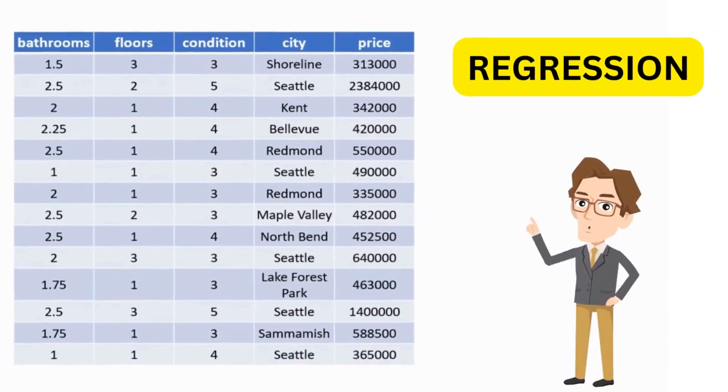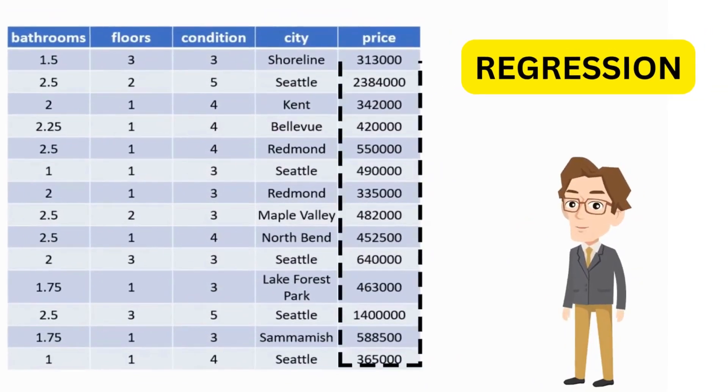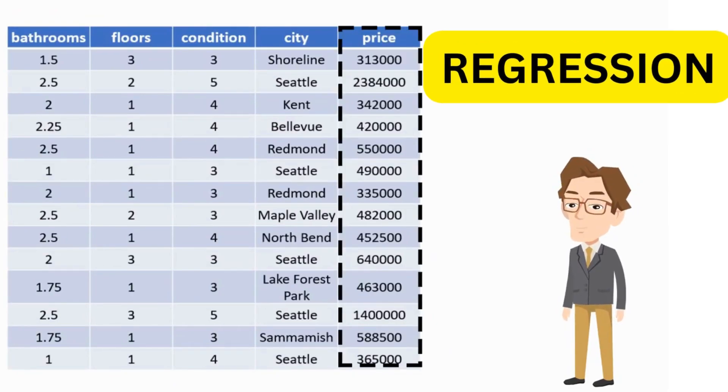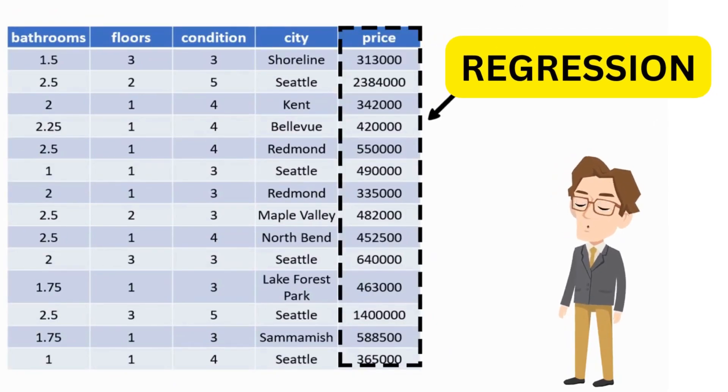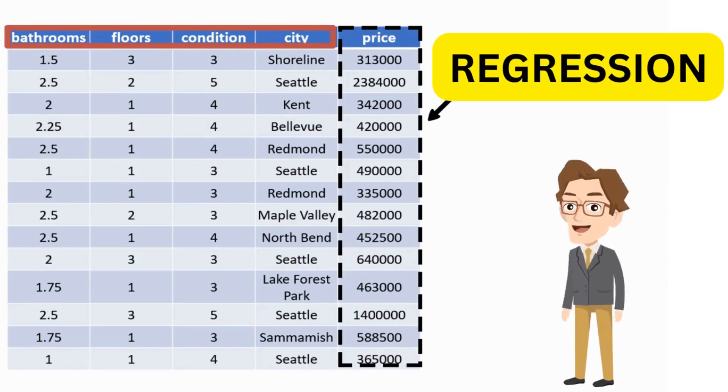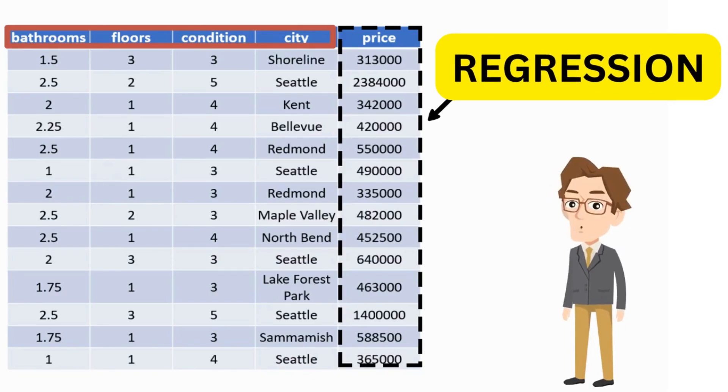In regression problems, the output values of target class are continuous. Target value must be integer or float. In this example, target value of house price is an integer value that depends on bedrooms in house, floors, condition and location. So our model will predict an integer value of house price by using these features.